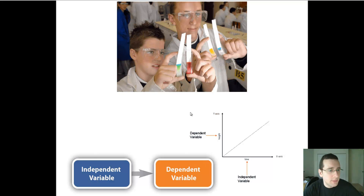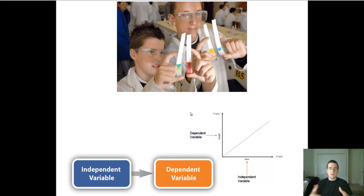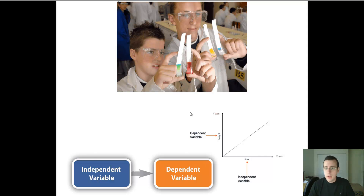The only time you would do something like a correlational study — like observational research, archival research, or surveys — is when you can't actually create a controlled experiment, like the smoking and cancer example, or the aggression and watch TV example, because you can't intentionally cause harm. There are also times when you can't actually control things. But when you can control, when it's possible to exert ultimate experimental control, then it's preferable to do it.